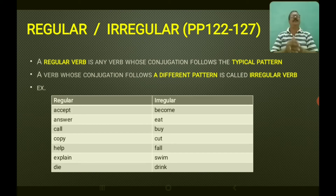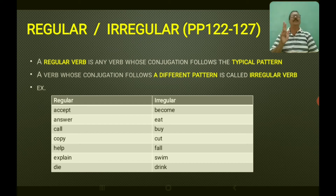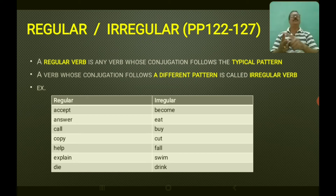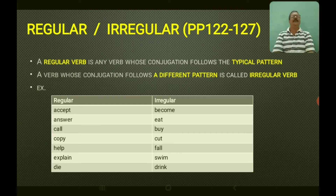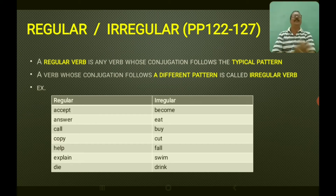There are six forms of main verbs — I will be speaking about them later on. Actually, we have three key forms of main verbs: present tense, past tense, and past participle. A regular verb follows the typical conjugation pattern. What is an irregular verb? A verb whose conjugation follows a different pattern is called an irregular verb.